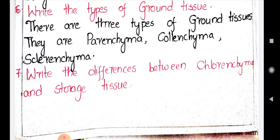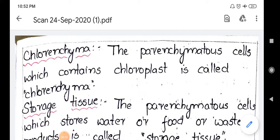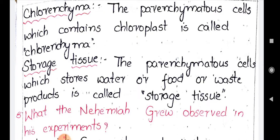Question 7: write the differences between chlorenchyma and storage tissue. Chlorenchyma: parenchyma cells which contain chloroplast are called chlorenchyma. Storage tissue: parenchyma cells which store water, food material, or even waste products are called storage tissue. Its function is to store materials — either important substances or waste. Both chlorenchyma and storage tissue come under parenchyma, which is one of the ground tissues.